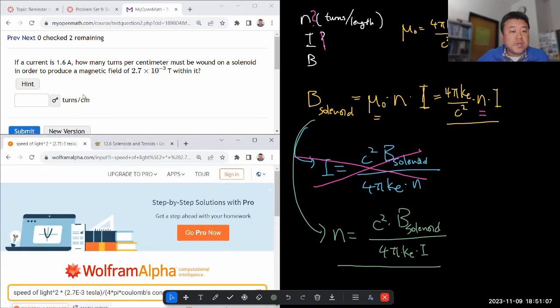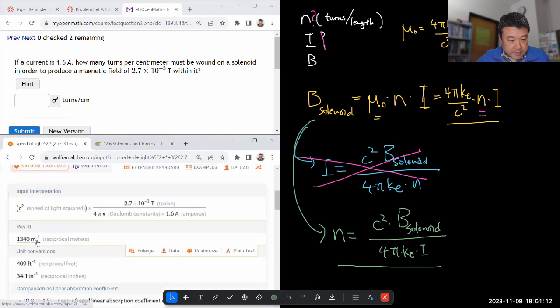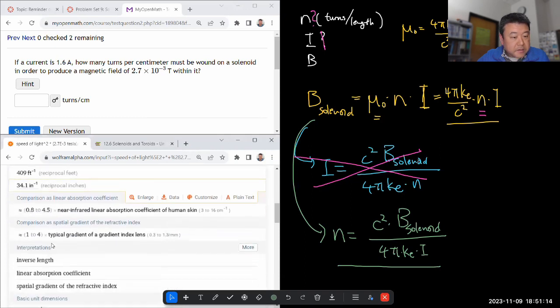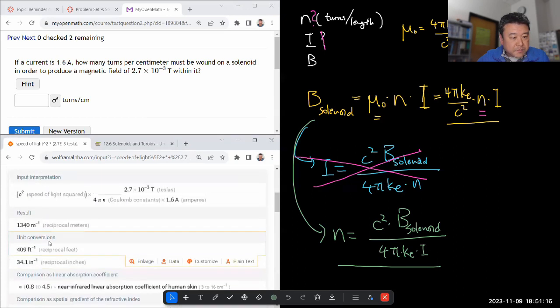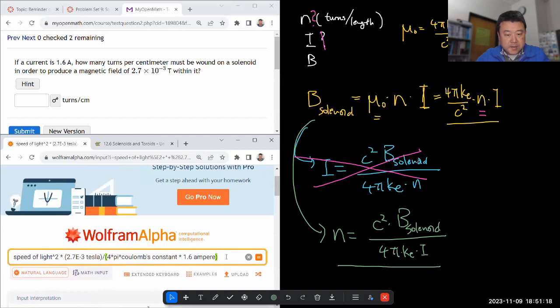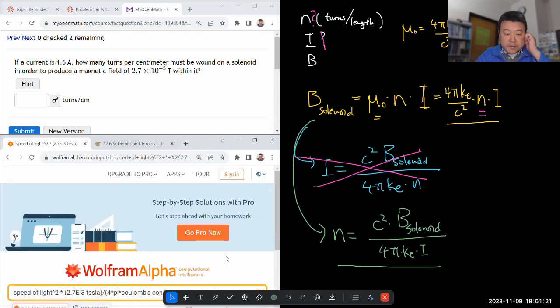And so it should give me something in the units of inverse length. And let's see. Yeah, reciprocal meters. It does it. It's not doing reciprocal centimeters. So let me say in centimeter raised to the power of minus one.